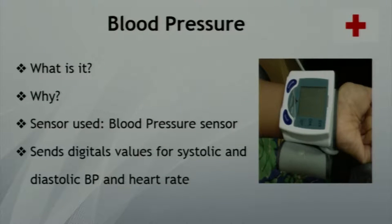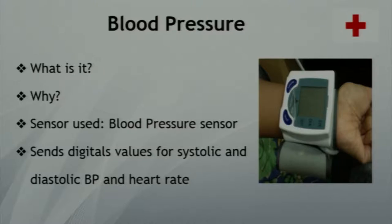Blood pressure is the pressure of the blood in the circulatory system. More than 40% of people above the age of 25 suffer from hypertension, making it a vital body parameter. The sensor we used was the Sunrom Technologies blood pressure sensor. It sends digital values for systolic pressure, diastolic pressure, and heart rate.